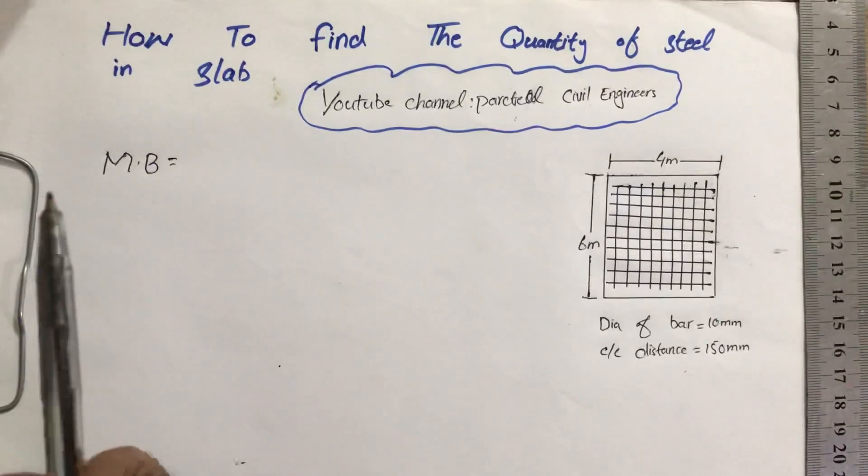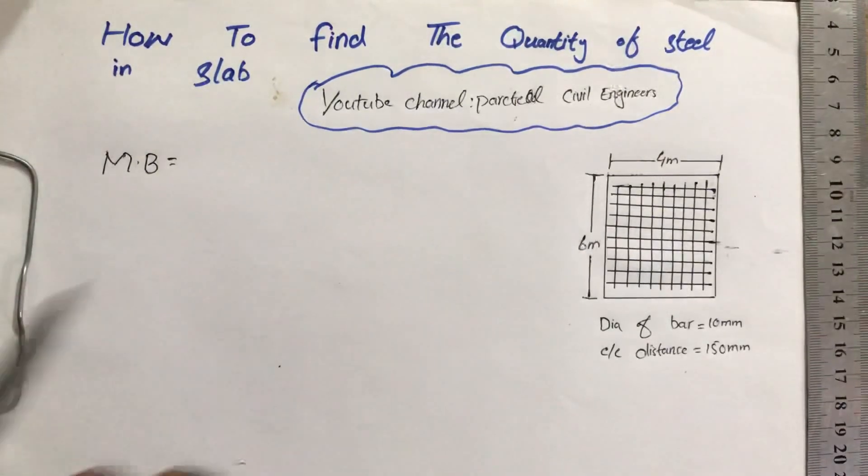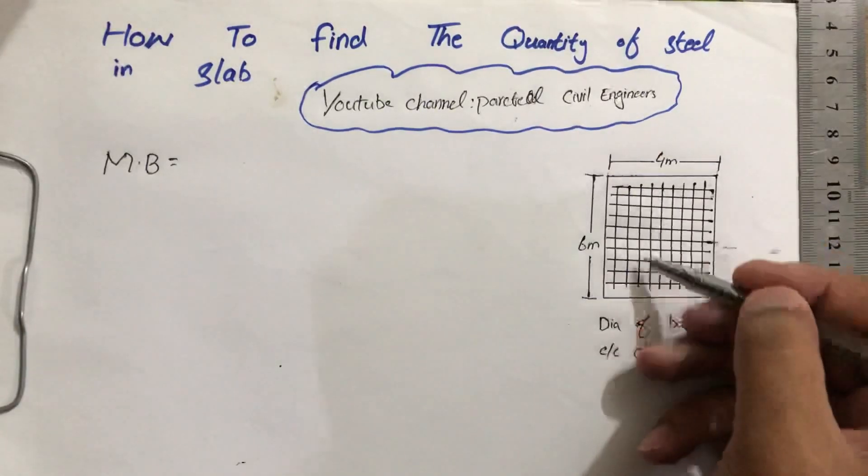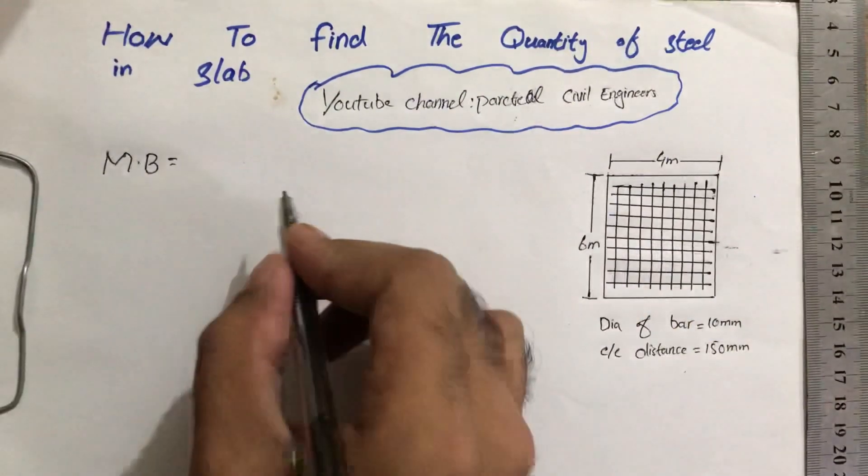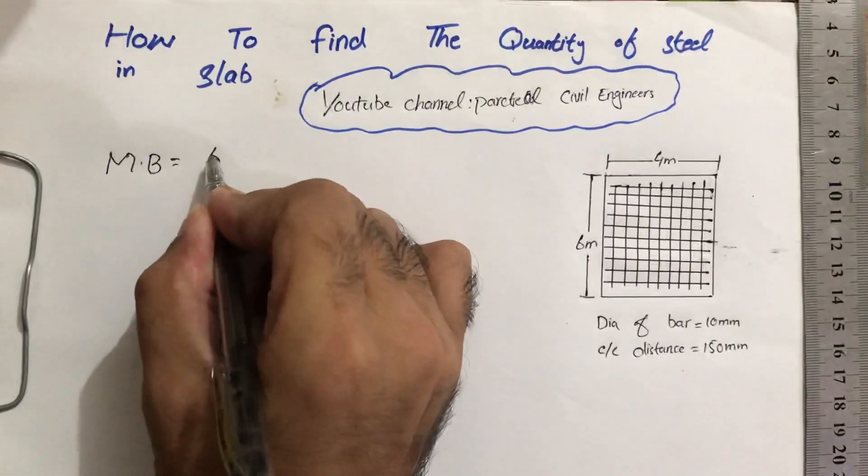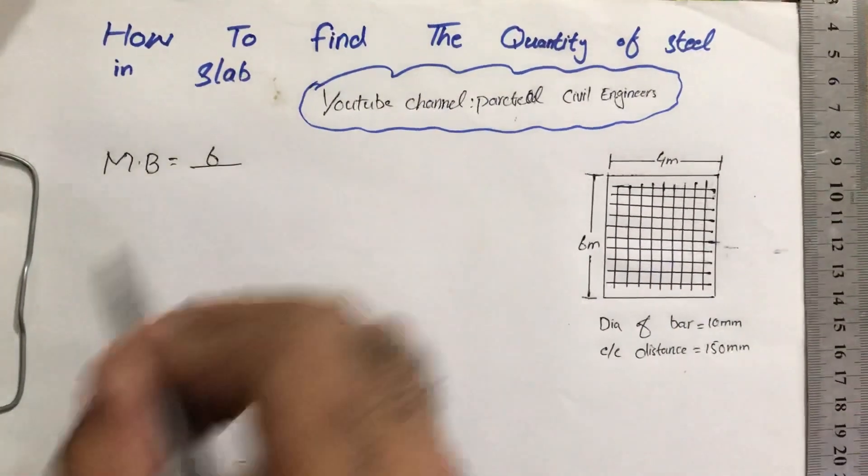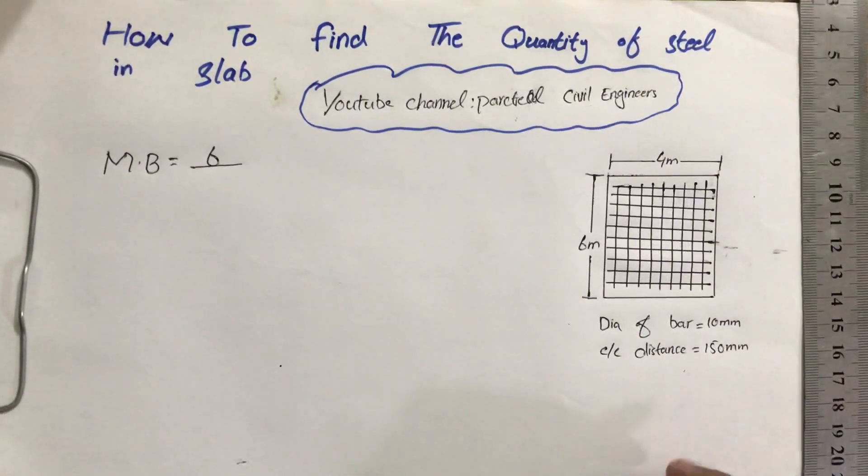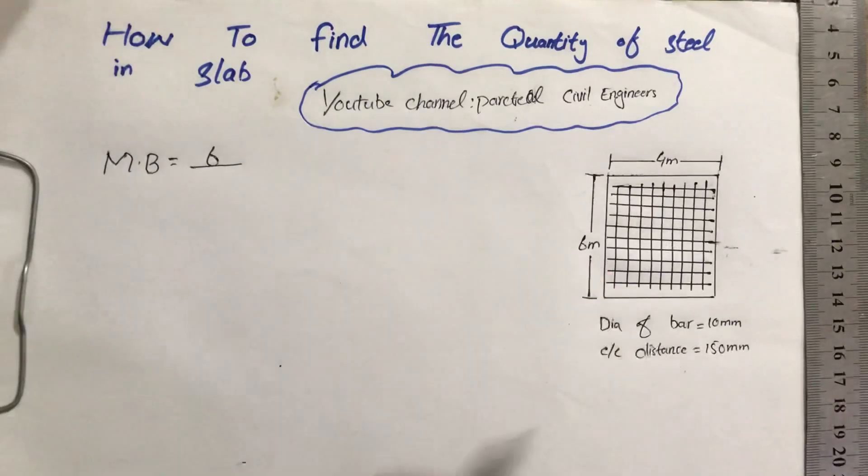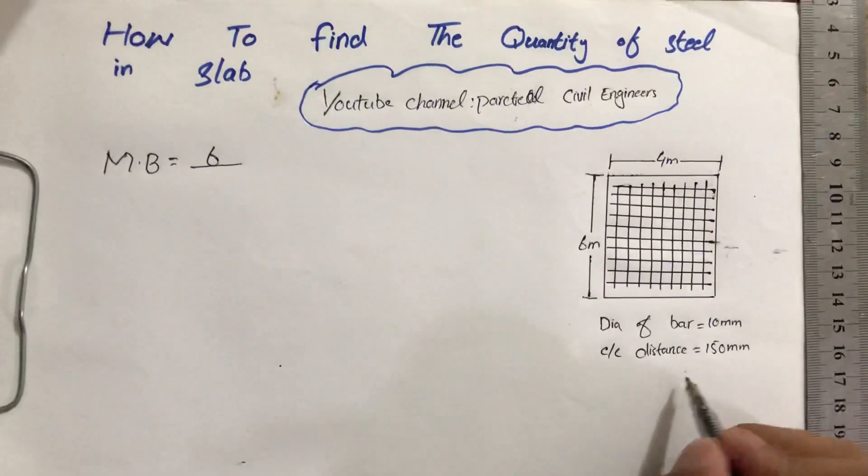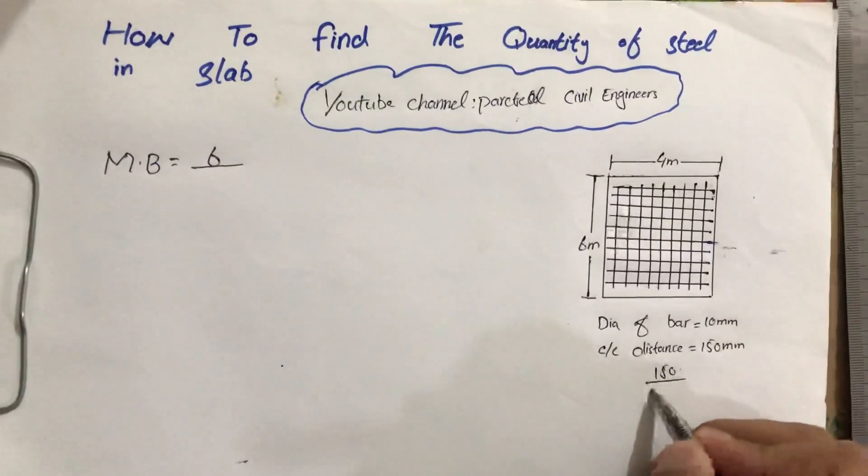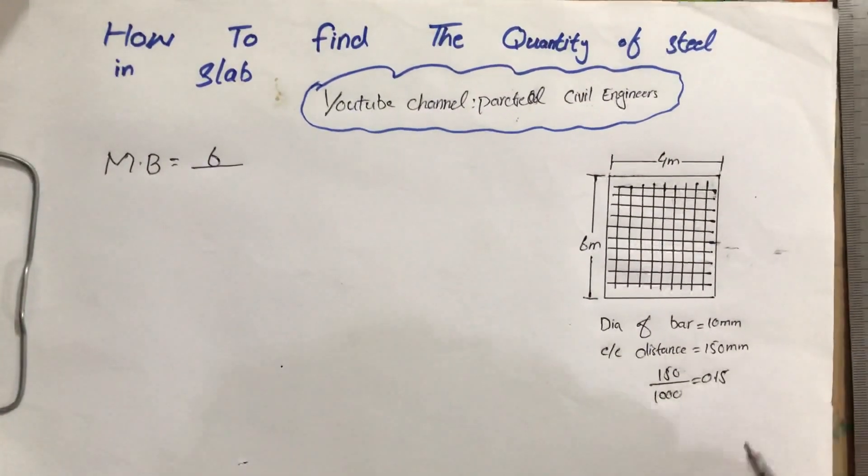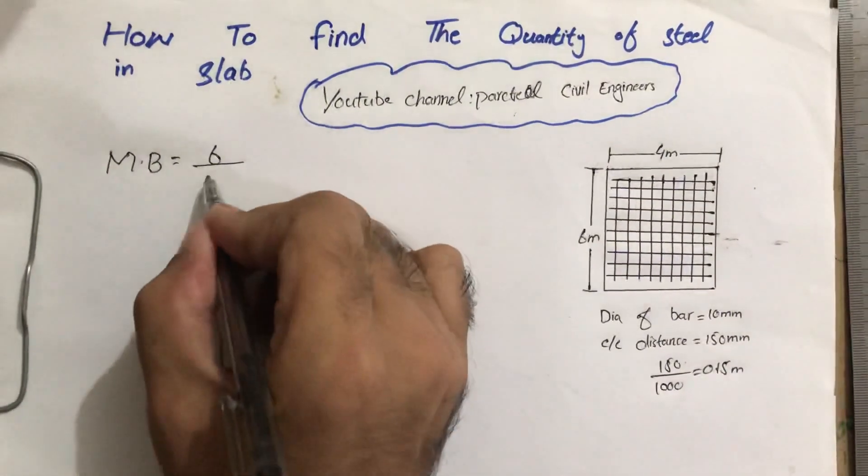We will take the length of the distribution side because we have to find the number of bars. It is six meters divided by center to center. The center to center distance is 150 mm, so we have to convert it to meters. 150 mm divided by 1000 equals 0.15 meters, so divided by 0.15 plus 1, we will get 41 numbers.